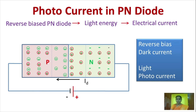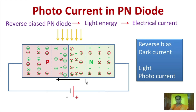Now, when light is incident on the depletion region, the electrons are liberated from the atoms by absorbing photons. Hence, electron-hole pairs are generated. The minority charge carriers move towards the potential, which constitutes the current known as photocurrent.